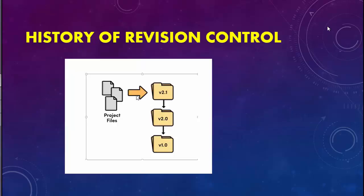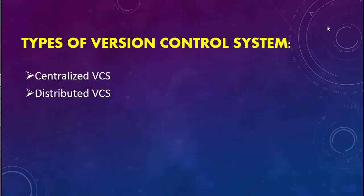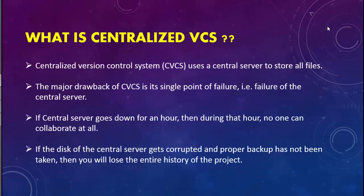Now, what are the types of version control systems? Git did not just appear one day — they were practicing different systems before Git was introduced. The version control system is divided into two types: one is called the Centralized VCS, meaning the Centralized Version Control System, and the other is called the Distributed Version Control System. Let's talk about each of these.